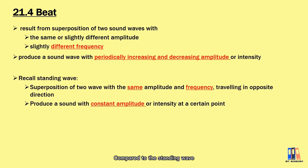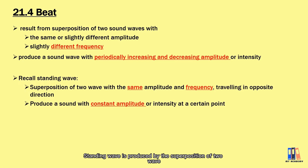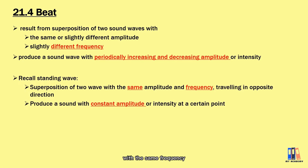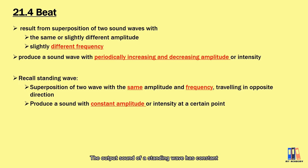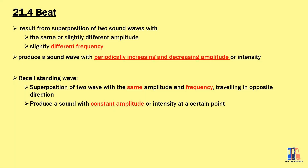Compared to the standing wave, the difference is the requirement of the input wave. A standing wave is produced by the superposition of two waves with the same frequency but travelling in opposite directions. The output of a standing wave has constant amplitude at a certain point from the source.